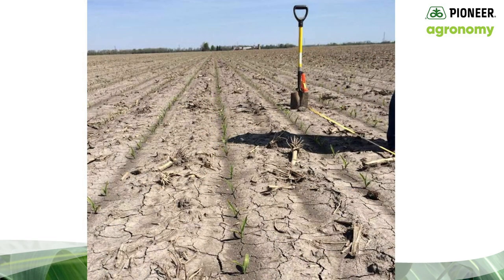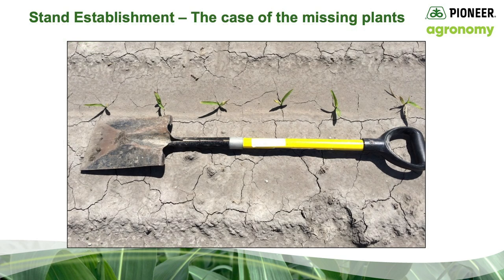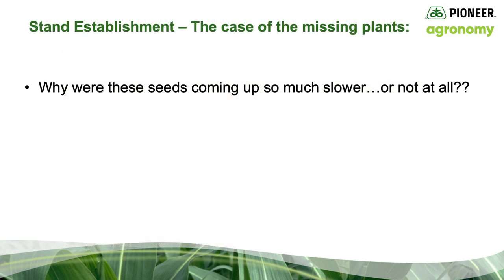Walk with me now as I try to figure out why there are slow-growing and/or missing plants in this field — the case of the missing plants. Here are the facts: the planting date was April 18th, which is all too early for Central Michigan. Plant uniformity was good, but there were enough skips for some concern. Every 30 to 40 feet, there were roughly two plants in a row showing slow emergence. I could lay the spade down in this 20-inch row field and it generally equaled six healthy plants across most areas, but about every 30 to 40 feet there were generally two plants next to each other — as indicated by the red line — that were slow to emerge or not emerged at all.